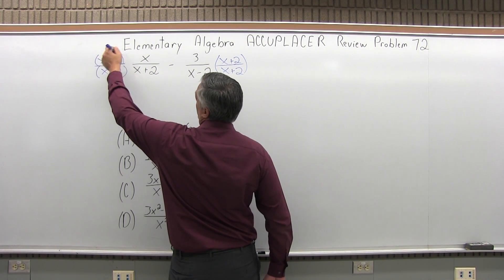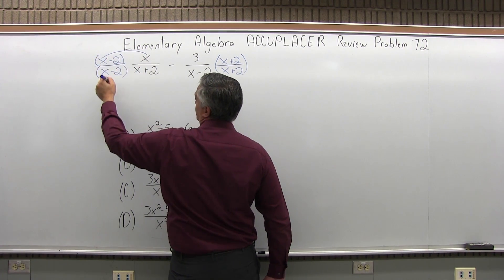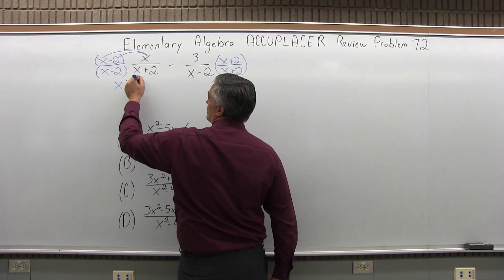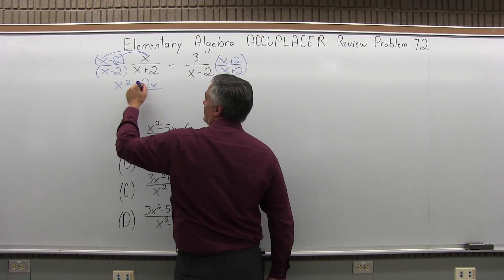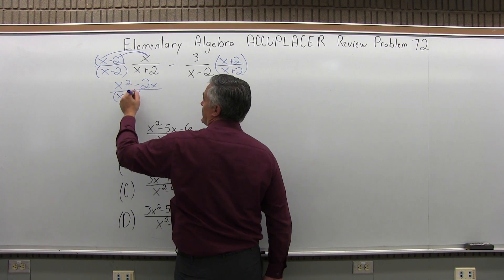So in the numerator of the first fraction, I'm going to have x times x, which is x squared. x times negative 2 is minus 2x. And the denominator will be x minus 2 times x plus 2.